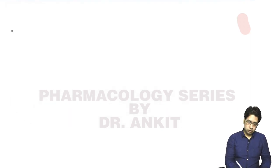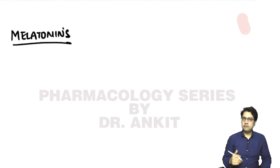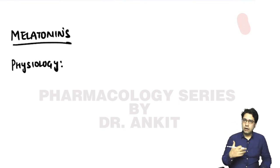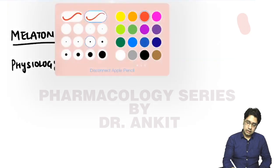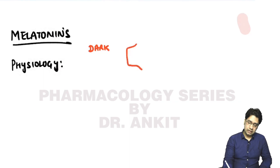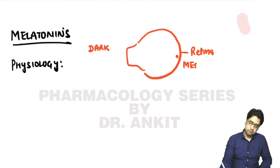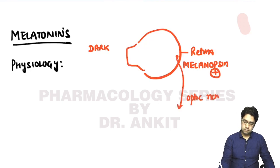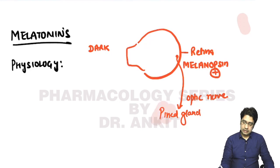The next class is melatonins. Melatonin is a neurotransmitter in our brain. When there is darkness, a pigment in our retina called melanopsin gets stimulated, which stimulates the optic nerve. The optic nerve signals the pineal gland, which releases melatonin.